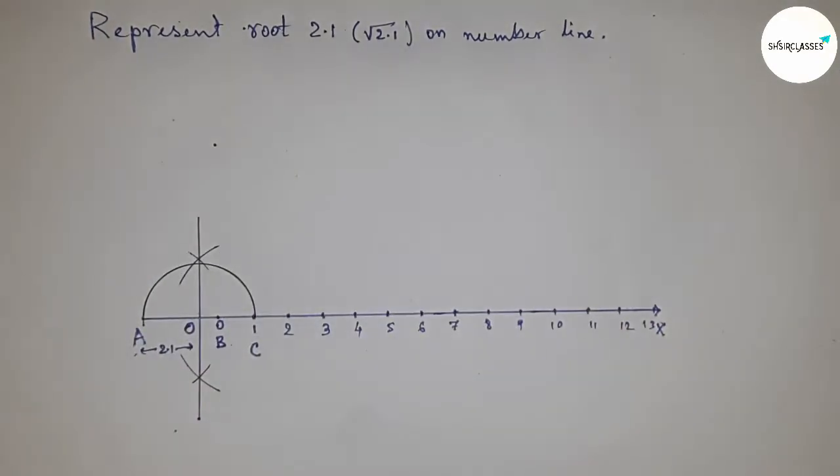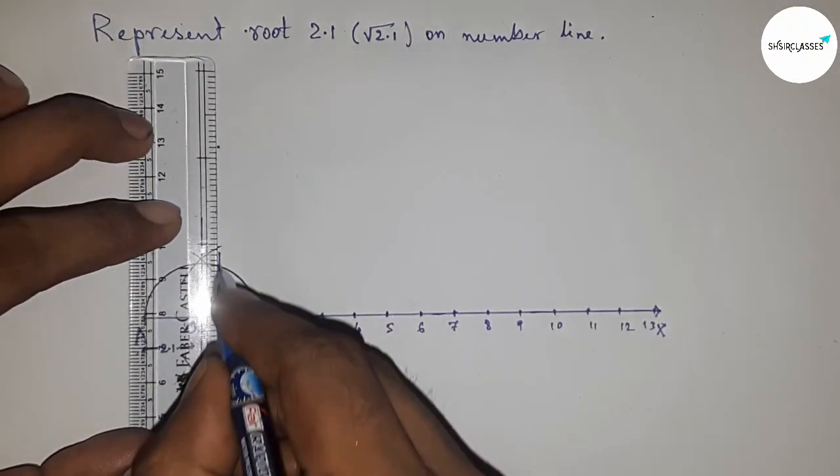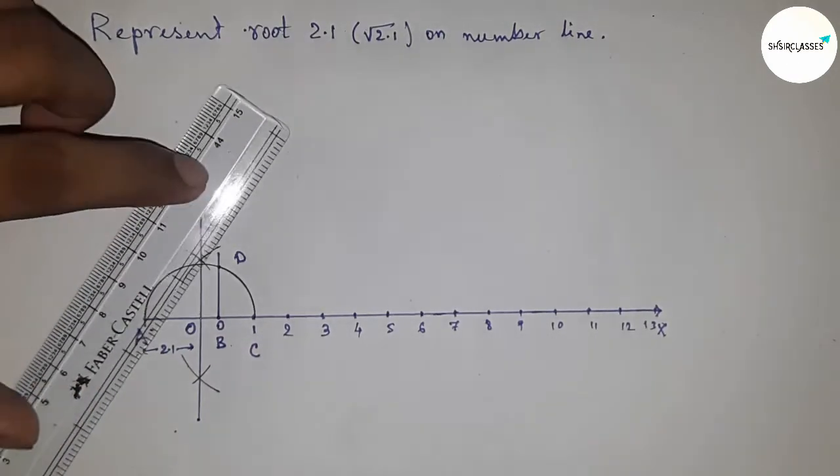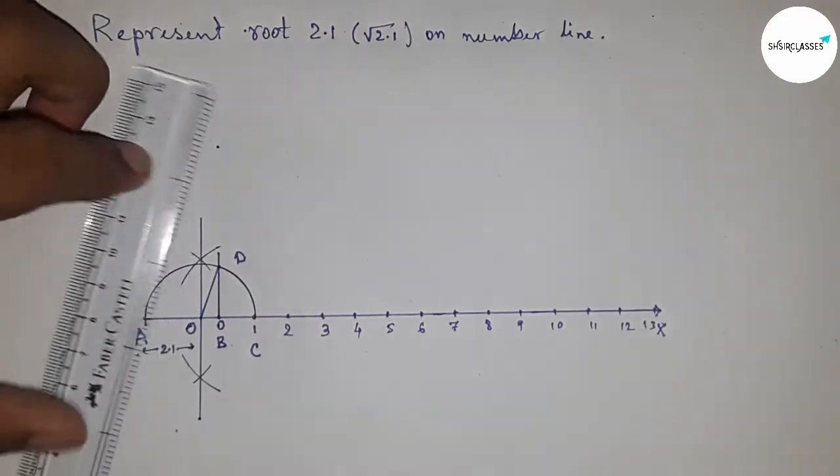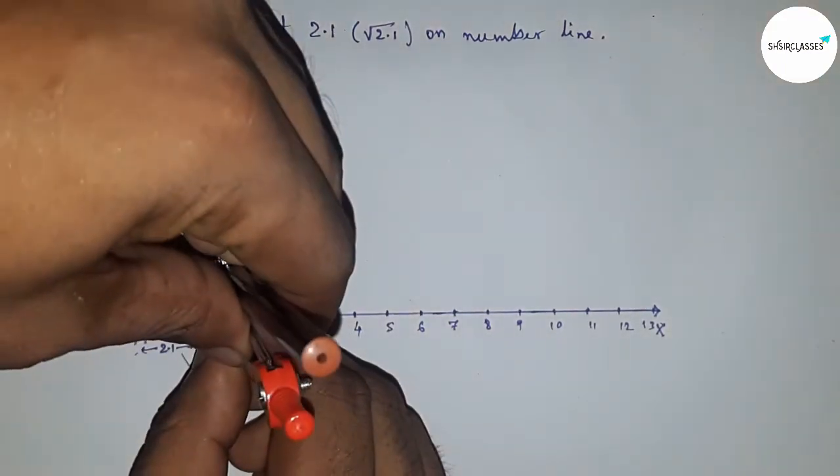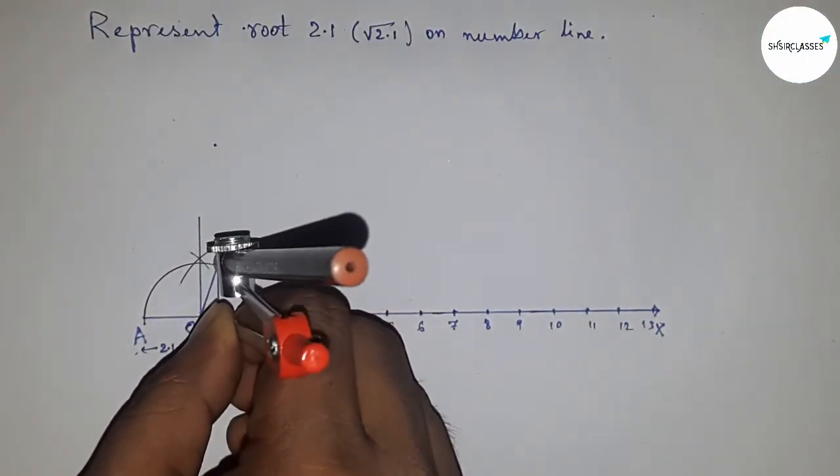Join this which meets the semicircle at point D. Next, join O and D which is the radius of the semicircle. Now take the distance BD which is root 2.1.